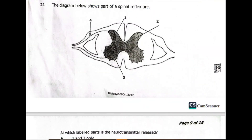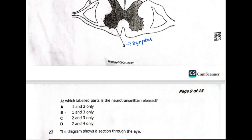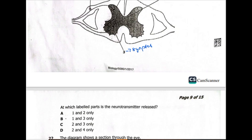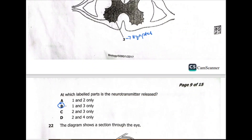Question 21: the diagram shows part of the spinal reflex. We can see the sensory neuron, then the synapse — which is a junction between two neurons, also known as a cleft. Then we have the relay neuron, and another synapse. At which labeled parts is the neurotransmitter released? Neurotransmitter release occurs at the synapse, at the junction. We have two junctions: level 1 and level 3. The answer is 1 and 3 only.